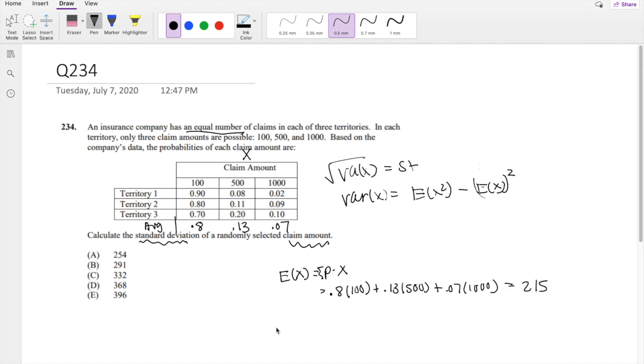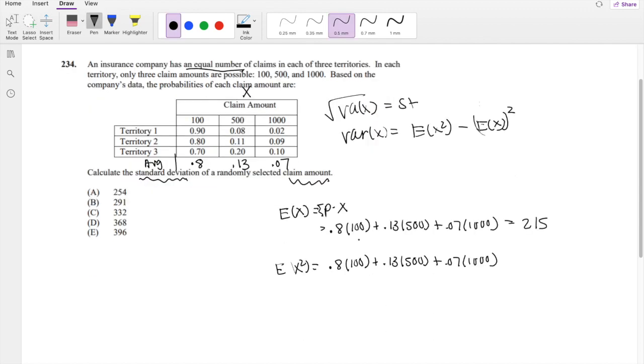Alright, so now we just have to find the second moment. The second moment, we just have to do the exact same thing as this one, except we just have to do our x squared. So I'm going to copy and paste here. So I'm going to add a little squared in there, because this is our second moment. This is equal to 110500.